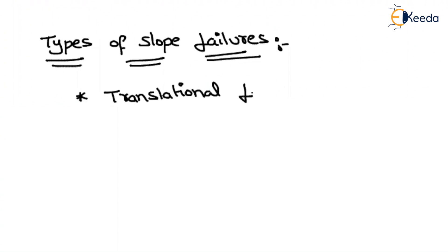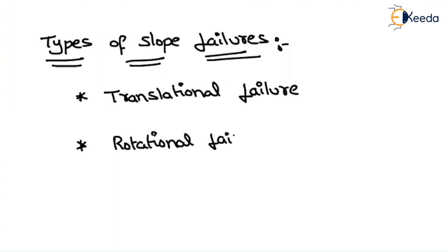From the name itself, translational failure means whatever the soil mass that is failing simply slides over the slope. Rotational failure means whatever the soil mass that is failing will simply rotate with respect to some common point, which is called the point of rotation.